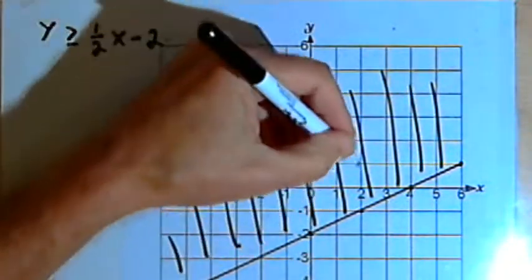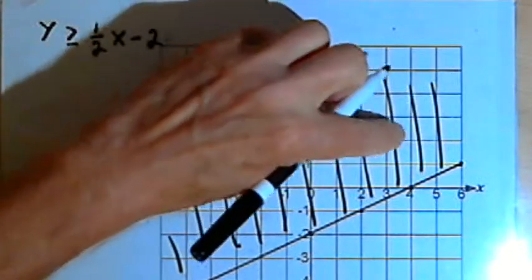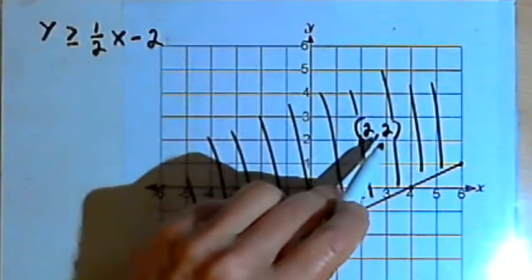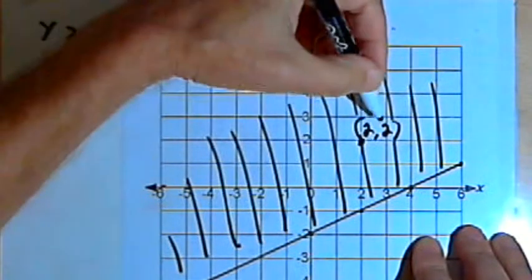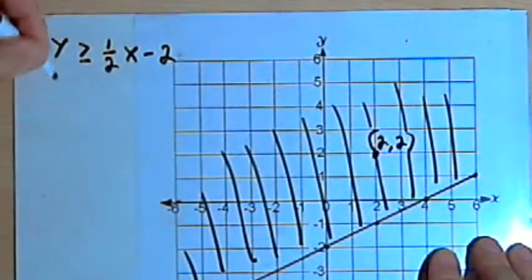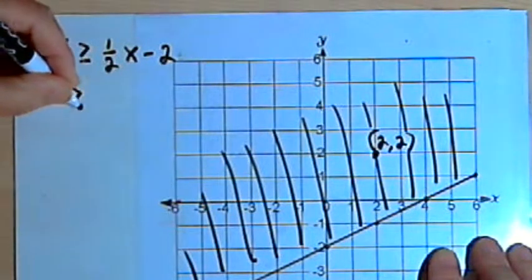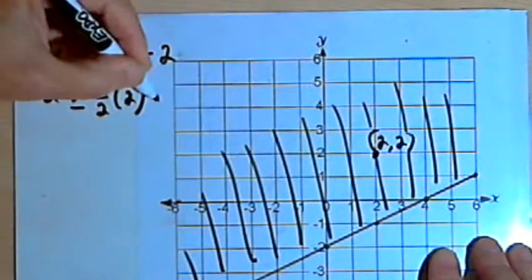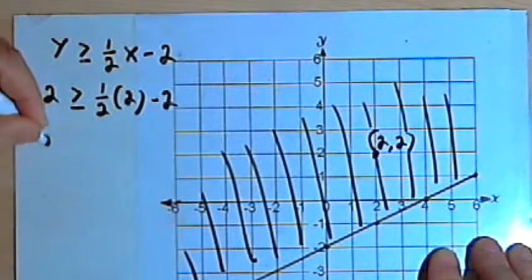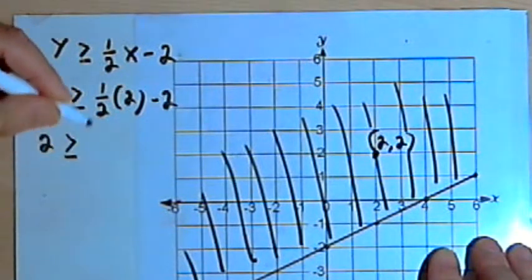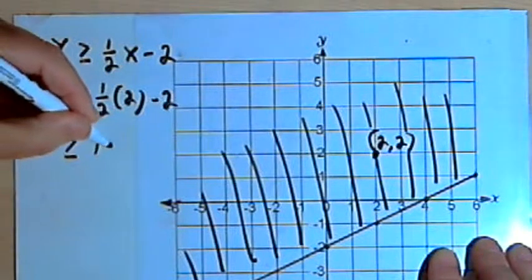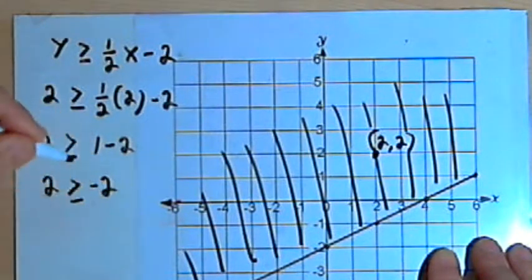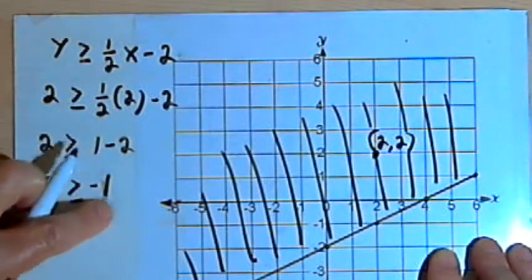Let's take the point (2, 2). So at that point, x equals 2 and y equals 2. I'll just take those values and plug them into the inequality. So instead of y, I want 2 is greater than or equal to one-half, and then instead of x, I want a 2, minus 2. So that's going to become 2 is greater than or equal to one-half times 2 is 1, minus 2. And then we end up with 2 is greater than or equal to negative 1, which is obviously true.